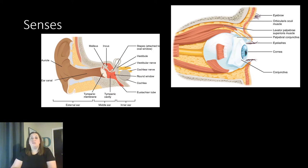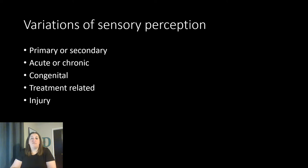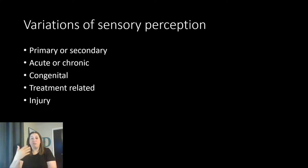If any of those are affected, it could potentially affect how you perceive the world around you and ultimately your quality of life. When we look at variations of sensory perception, some could be a primary problem — meaning the issue developed with the sensation itself — such as a vision problem, a hearing issue you were born with, or being unable to taste properly. Secondary means it developed due to something else, like a medication affecting your vision or taste, or COVID causing you to lose smell and taste.